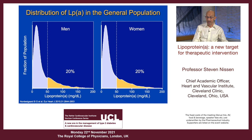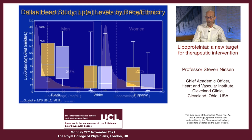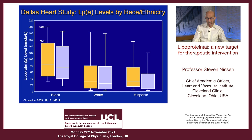This is from the Dallas Heart Study, men and women. You see that race makes a difference. African Americans have levels substantially higher — more than two-fold higher than white or Hispanic patients. If you look at the 90th percentile confidence limits in nanomoles per liter, they range up to about 200 nanomoles in Black patients.